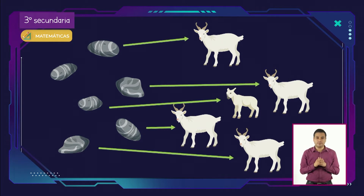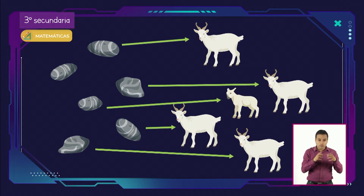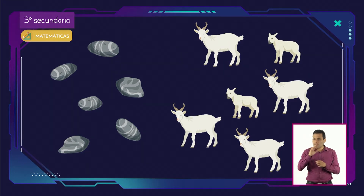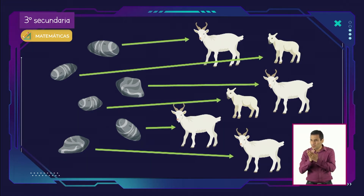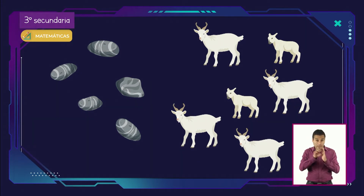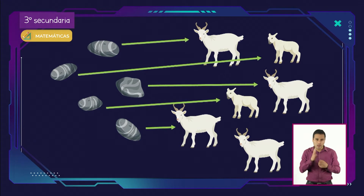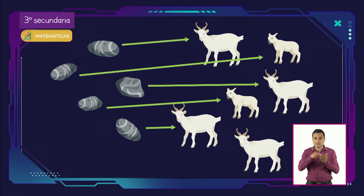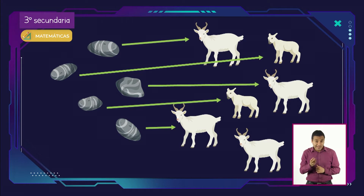Si el conjunto de guijarros era mayor que sus animales, indicaba la falta de alguno de estos. Mientras que si coincidía uno a uno, los guijarros representaban bien a la cantidad de animales. Pero si los guijarros eran menos que los animales, indicaba algunos nacimientos o la llegada de algún animal ajeno a la manada. De este modo, con este sistema, era posible llevar un único registro mediante un proceso de comparación.